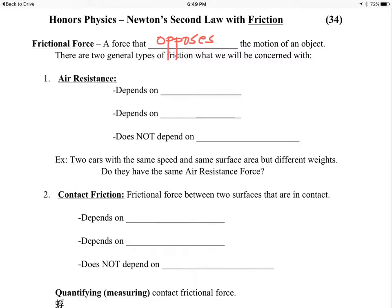Newton's Second Law, F net equals Ma, with friction. There are two general types of friction that we will be studying. Air resistance is a frictional force, and contact friction, friction between two things that are rubbing. A frictional force is a force that opposes the motion of an object. It will be a force vector pointing in the opposite direction of the motion.